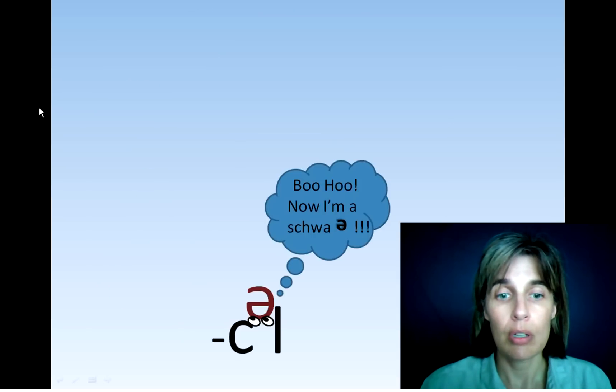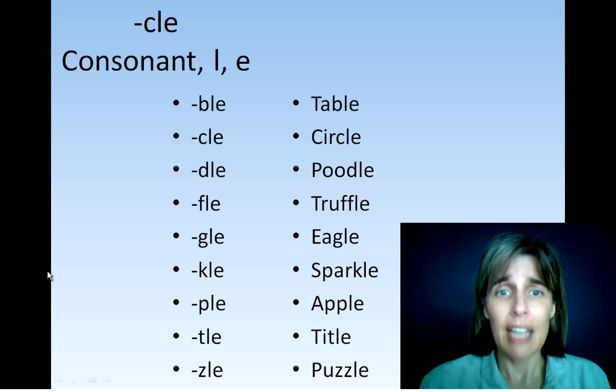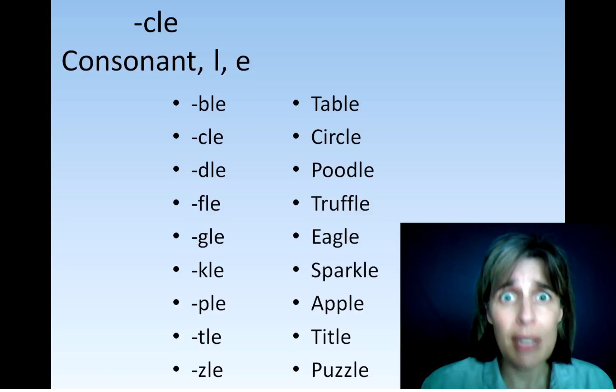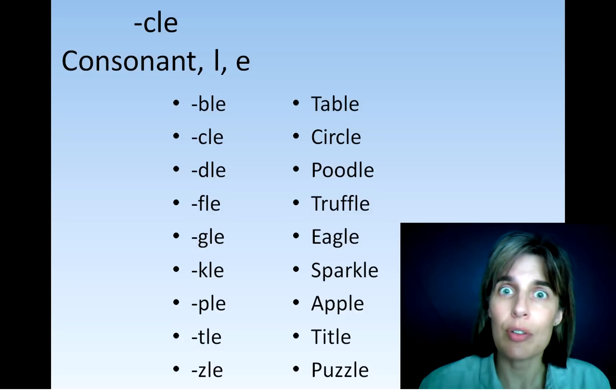Oh no! Woo-hoo! Now I'm a schwa! You notice what this looks like? Spaceship schwa! And that's exactly what happens in consonant L-E. The E tries to become a magic E, but it turns out flipping upside down and becoming a schwa.